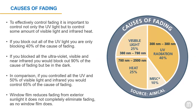Since UV is often associated with fading, it's important to discuss here. There's no film that will stop fading — we can only slow it. To effectively control fading, it's important to control not only UV light but also some visible light and infrared heat. Blocking all UV light only addresses 40% of the cause of fading. Even blocking all UV, visible, and near-infrared would only block 90% of fading causes — and you'd be in the dark. By controlling all UV, 50% of visible light, and 50% of the infrared, you'd control about 65% of the cause of fading. Window film reduces fading from exterior sunlight but does not completely eliminate it. By choosing the right window film, you can greatly reduce harmful solar rays and prolong the appearance and value of furnishings, fabrics, and finishes.